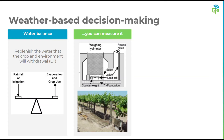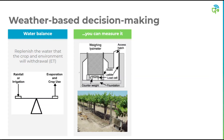You can measure actual ET using a weighing lysimeter, but this is a very costly piece of equipment. While it's been indispensable to the research community, it's not really a viable solution to measuring ET on a commercial scale. So instead, what we do is we model it, by placing a weather station on a well-watered grass reference crop.